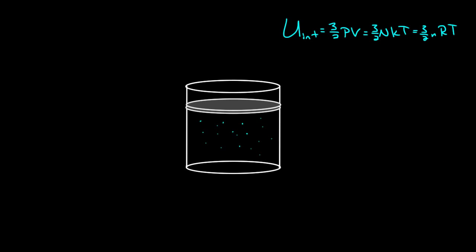Saying U internal — the internal energy — is really just code for the total kinetic energy of the monatomic ideal gas. These are the same thing. When we talk about internal energy, we're talking about how fast these particles are moving — what's the total kinetic energy of all of these particles added up.